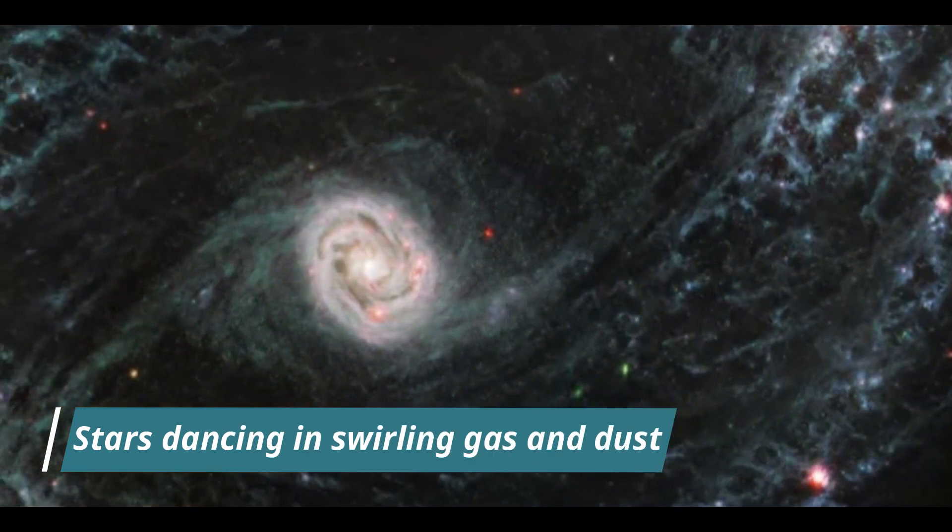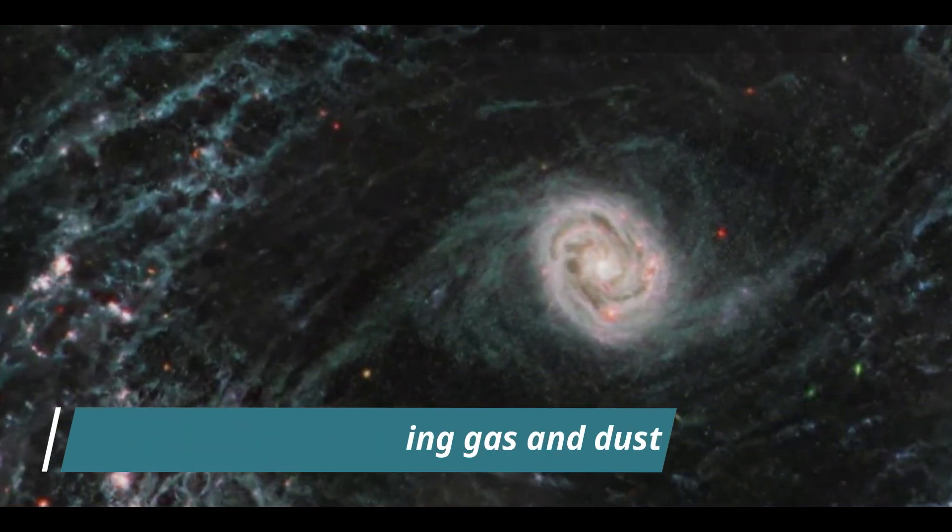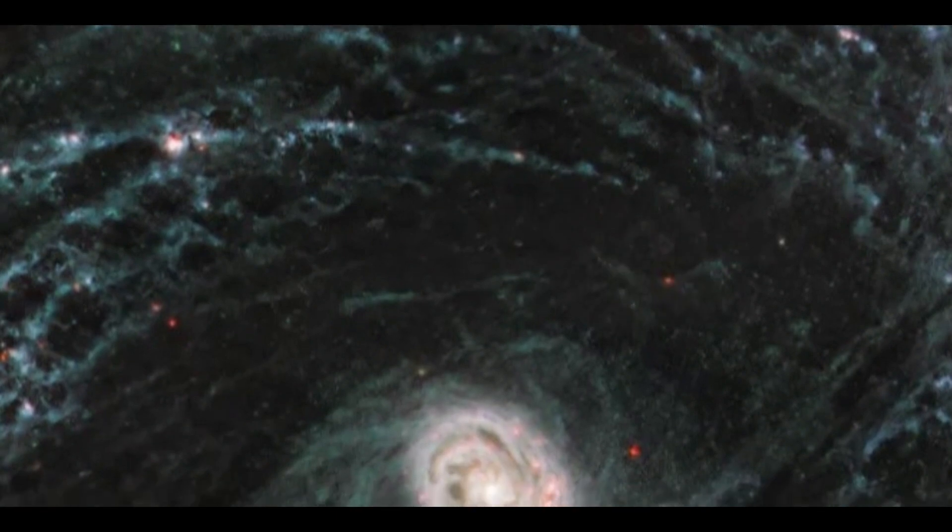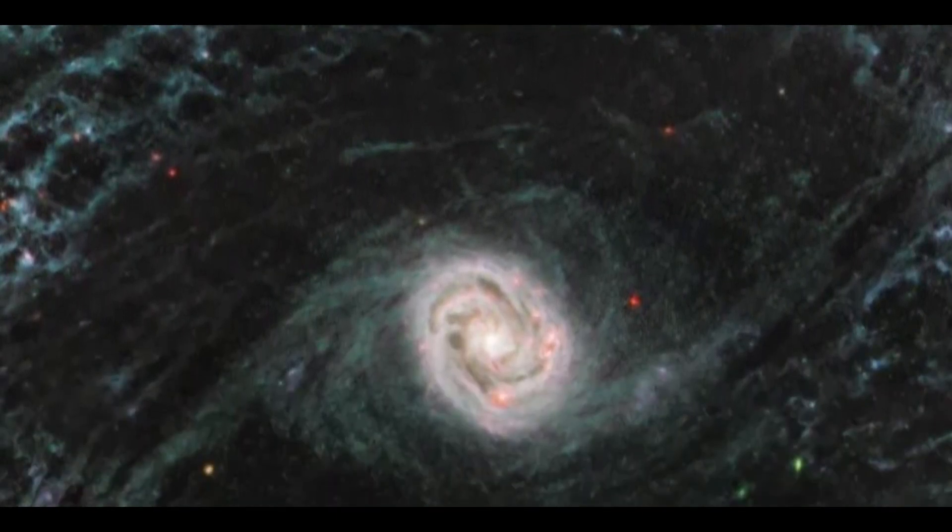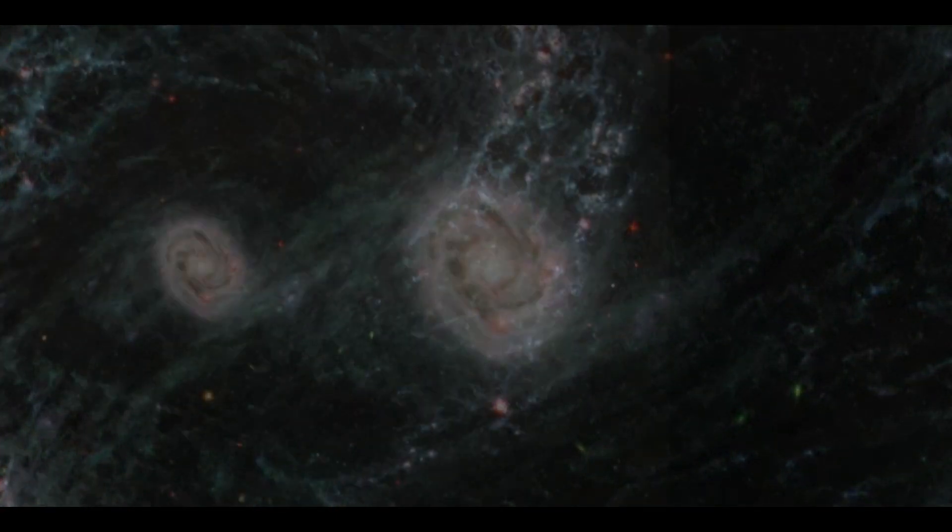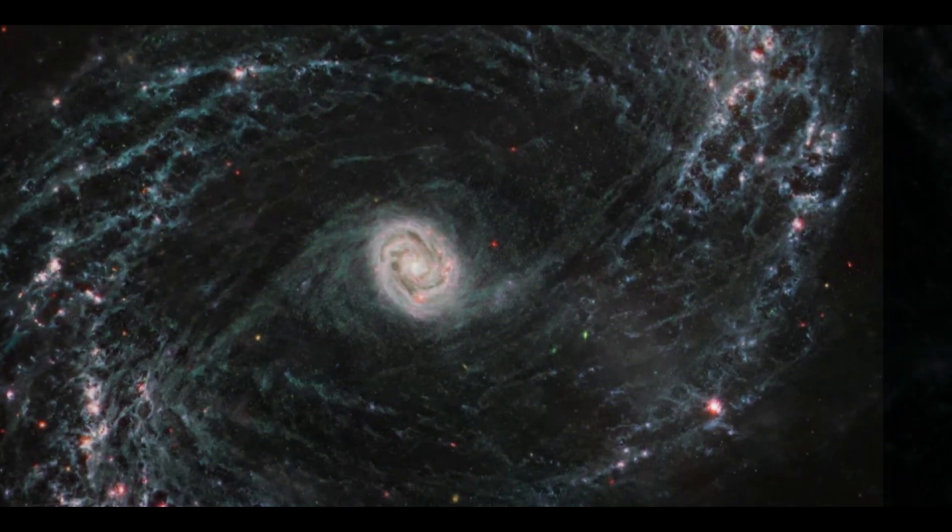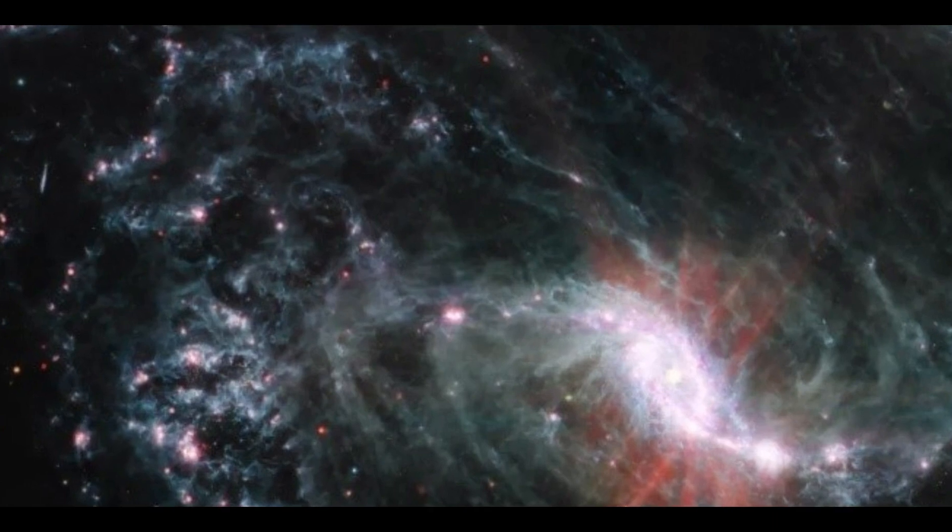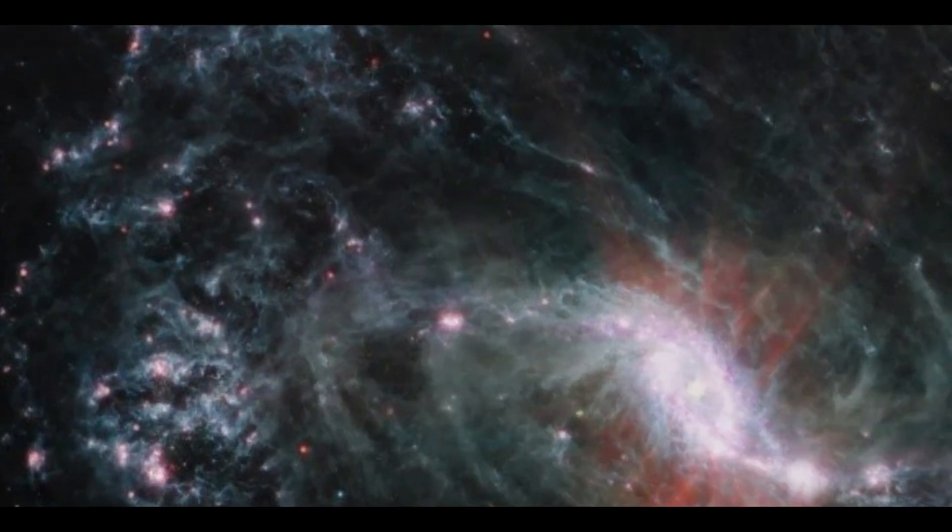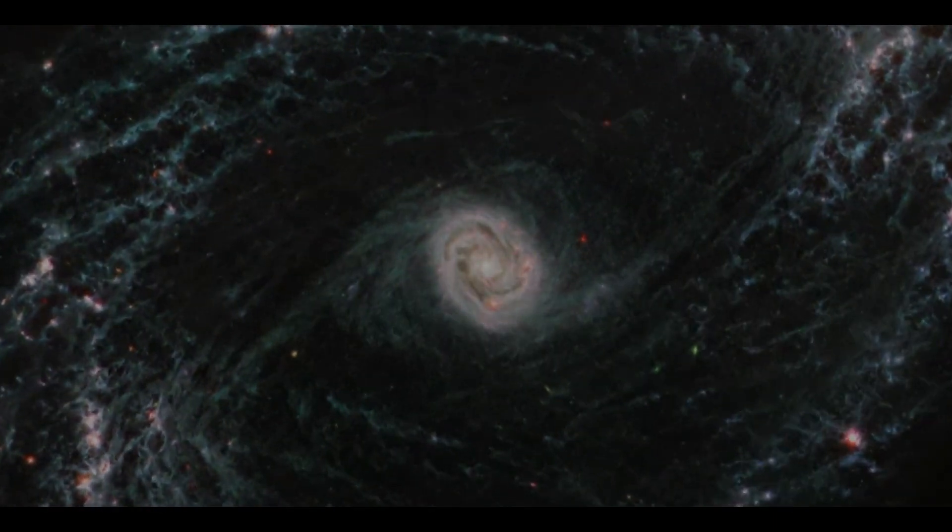Number 3, spies baby stars dancing in swirling gas and dust. The James Webb Space Telescope continues to perform admirably. This image, released today, depicts the arms of the barred spiral galaxy NGC 1433, which are teeming with young stars that can be seen impacting the clouds of gas and dust around them.